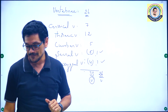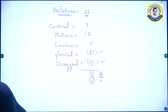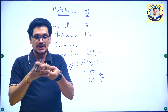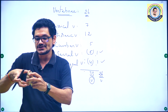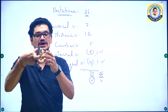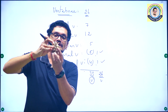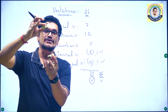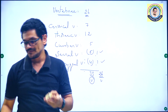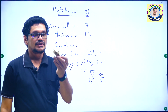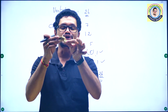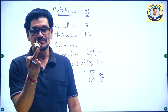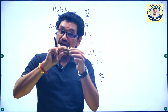Let me show you the vertebrae in human beings. These are the vertebrae. I will take one simple vertebra to explain. This is the neural spine. And this is the body — the body of the vertebra, or centrum of the vertebra.